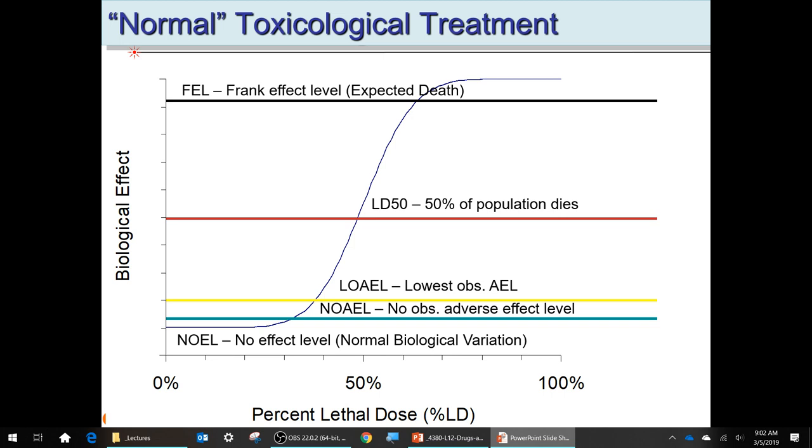For a model where the biological effect is death, up at the top you have the Frank effect level — and poor Frank — that would represent expected death.